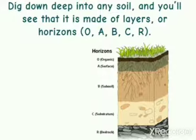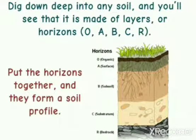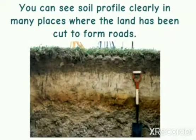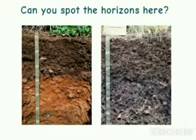Dig down deep into any soil and you will see that it is made of layers or horizons: O, A, B, C, and R. Put the horizons together and they form a soil profile. You can see a soil profile clearly in many places where the land has been cut to form roads. Can you spot the horizons here?